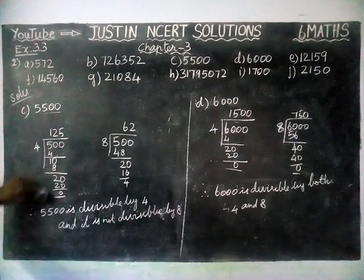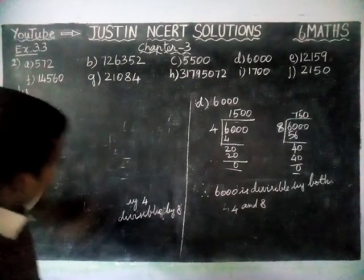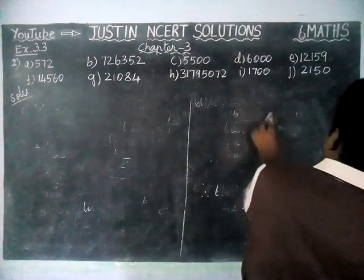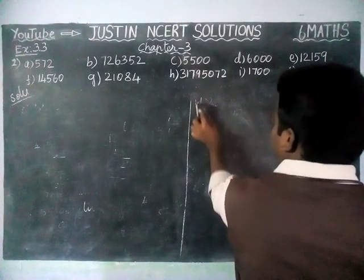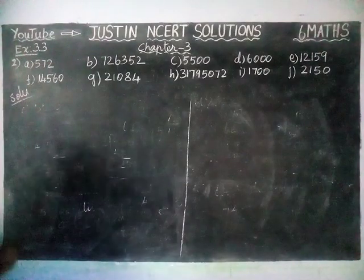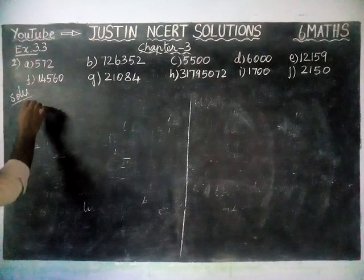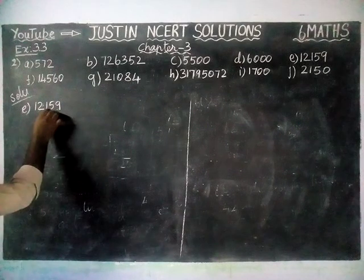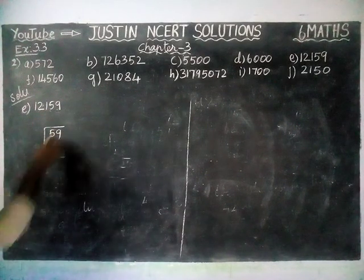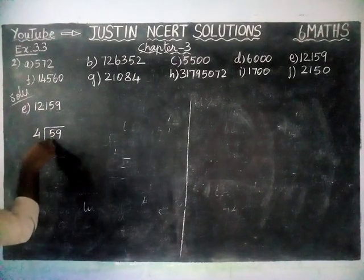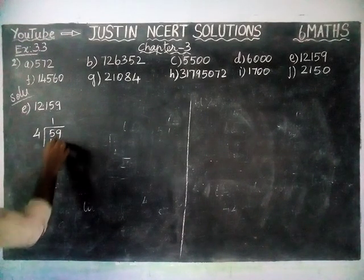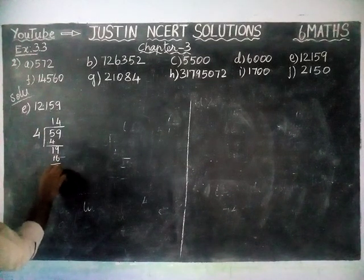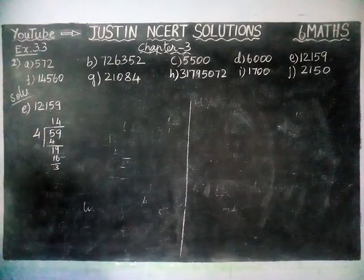Next, option E: 12,159. We check the last 2 digits, which are 59. Dividing 59 by 4: in 5 we have only 1 four, remaining 1, bringing down 9 gives 19. 4 fours are 16, remaining 3. Remainder 3 is coming, so this number is not divisible by 4.